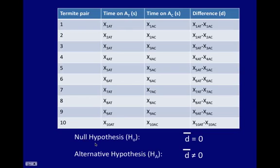And our null and alternative hypotheses here, then, are if there's no relationship between presence of ink and termite orientation, we would expect that they'd be equally likely to be in either A sub T or A sub C. And the difference, the average difference between the two would be zero. The alternative hypothesis would be that D is not equal to zero.